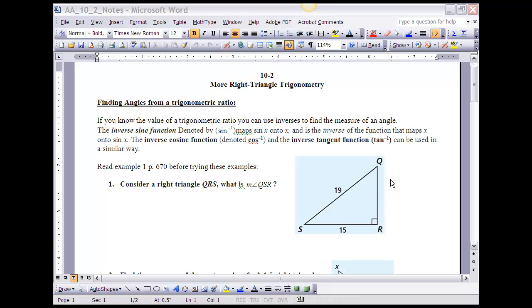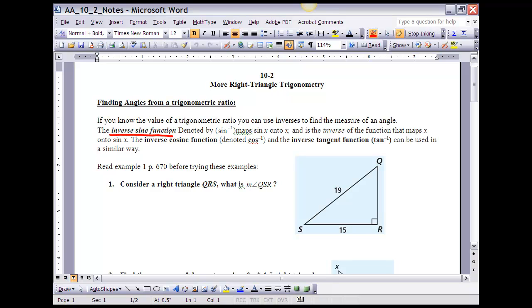If you know the value of trigonometric ratios you can use inverses to find the measure of an angle. The inverse sine function, which we write like this, sine inverse, maps the sine of x onto x. In other words, we've just kind of switched our x and our y, and the inverse of the function that maps x onto the sine of x.